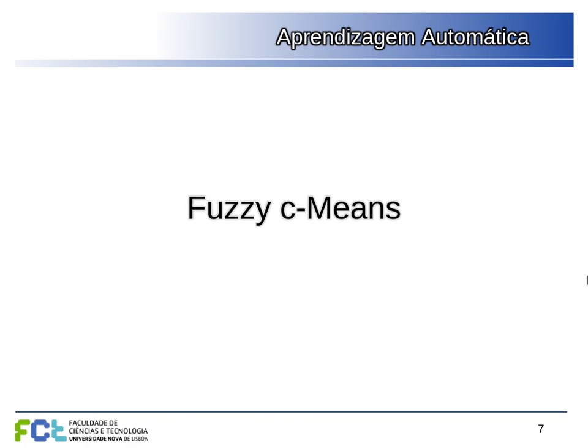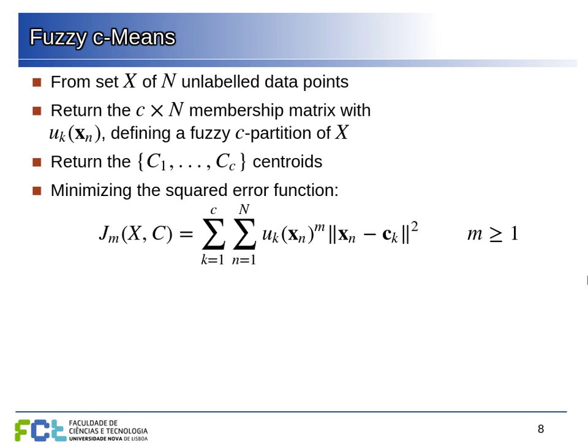The fuzzy C-means algorithm is similar to k-means but for fuzzy sets. Given a set X of n unlabeled data points, we want a c-by-n membership matrix telling us for each of the n examples how much it belongs to each of the c groups, as well as the centroid — the mean point — of each cluster.